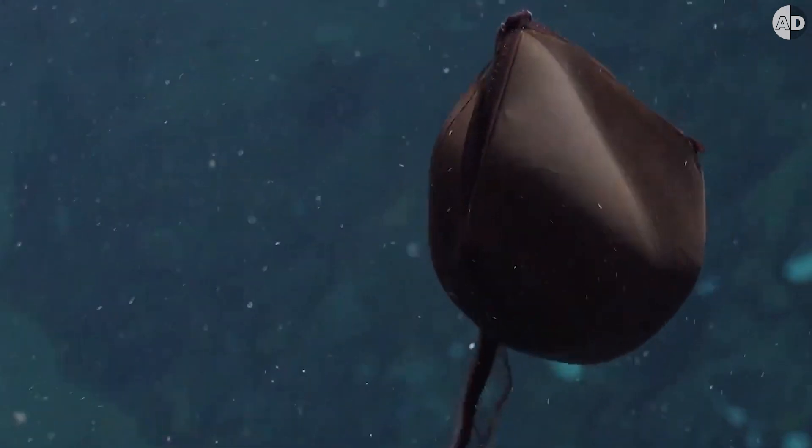This alien creature can devour prey that's twice its size. It's a gulper eel, and because catching food in the pitch-dark depths of the deep sea is not easy, its mouth has evolved to be enormous and loosely hinged so it can open wide enough to engulf very large prey in a single gulp.